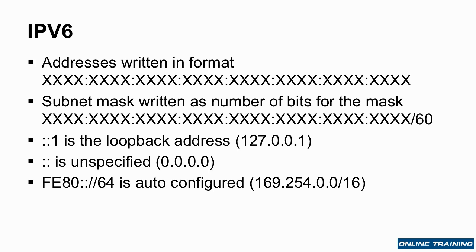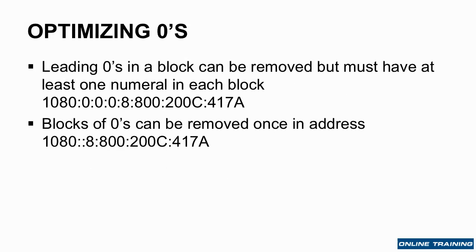Because it's such a massive number of bits, it makes IPv6 addresses very impractical to work with. So we try to optimize the zeros and remove as much extra notation as we can. Leading zeros in a block can be removed, but you must have at least one digit in each block. If there is a whole sequence of zeros in consecutive blocks, you can use a double colon. You can only use the double colon once within an IPv6 address, otherwise it wouldn't be clear which blocks are zeros.